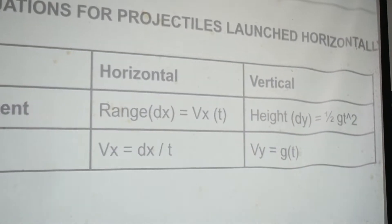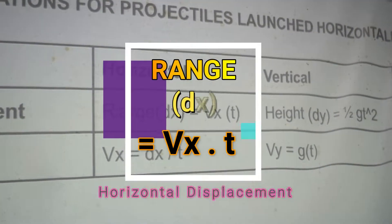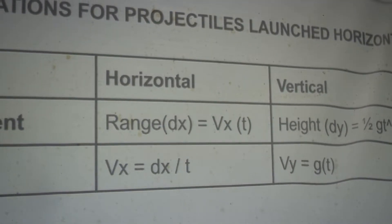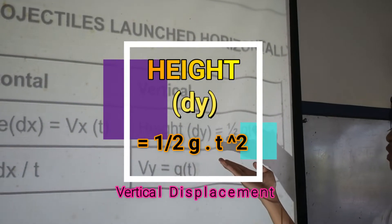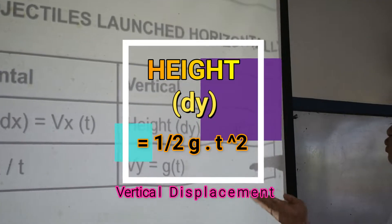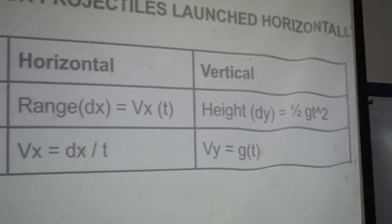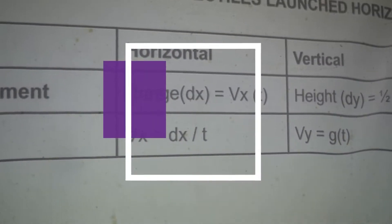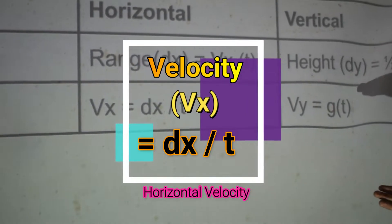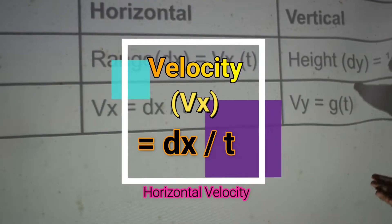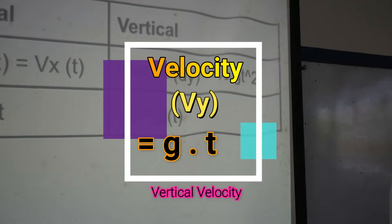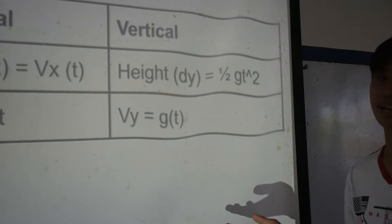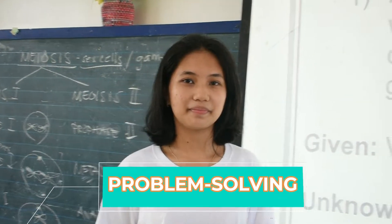For horizontal displacement, range or dx is equal to vx times time. For vertical displacement, height or dy is equal to one-half g times t squared. For horizontal velocity, vx is equal to dx over time. For vertical velocity, vy is equal to g times time.